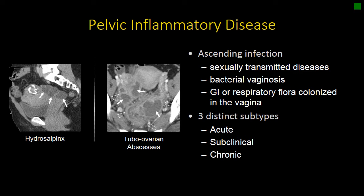Subclinical PID tends to be related to gonorrhea or chlamydia infections that are not causing enough pain, discharge, or symptoms to actually present, and we may see that manifest as incidental hydrosalpinx on imaging studies. Chronic PID is a completely different entity, associated with either Mycobacterium tuberculosis in endemic countries, or with intrauterine devices and actinomycosis infection.